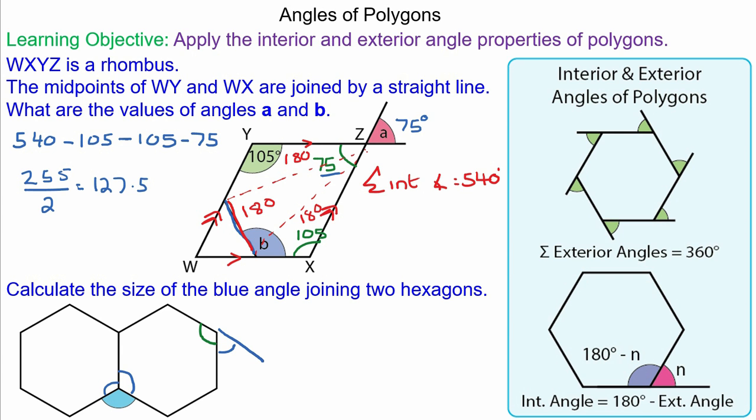So this angle would be 360 degrees divided by 6, because all the exterior angles add up to 360 degrees. So that would be 60 degrees, which means this angle would be 120 degrees. And all regular polygons have equal interior angles, so these two would both be 120 degrees.